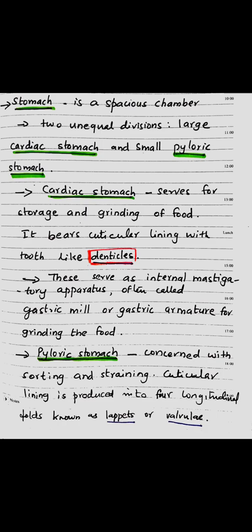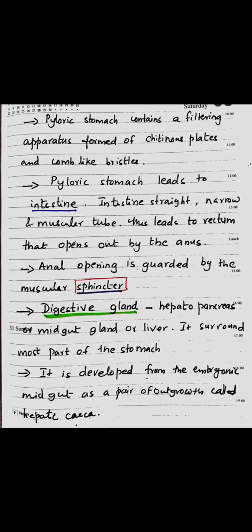It is connected to the esophagus and the stomach. The body of the stomach is spacious and large. The small pyloric stomach follows. The body of the stomach contains bristles and denticles for grinding the food — this is the gastric mill. The pyloric stomach functions in straining.